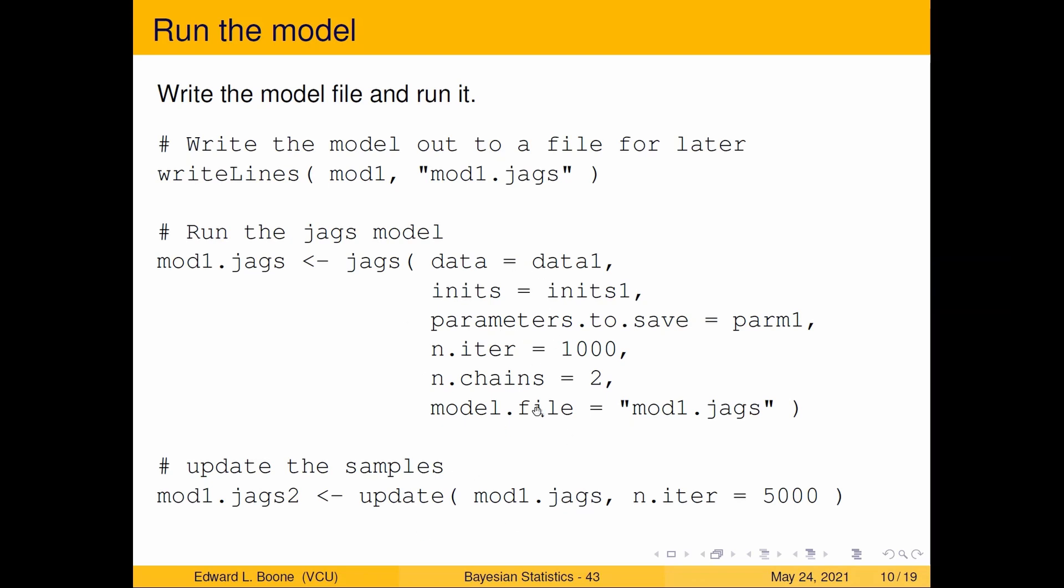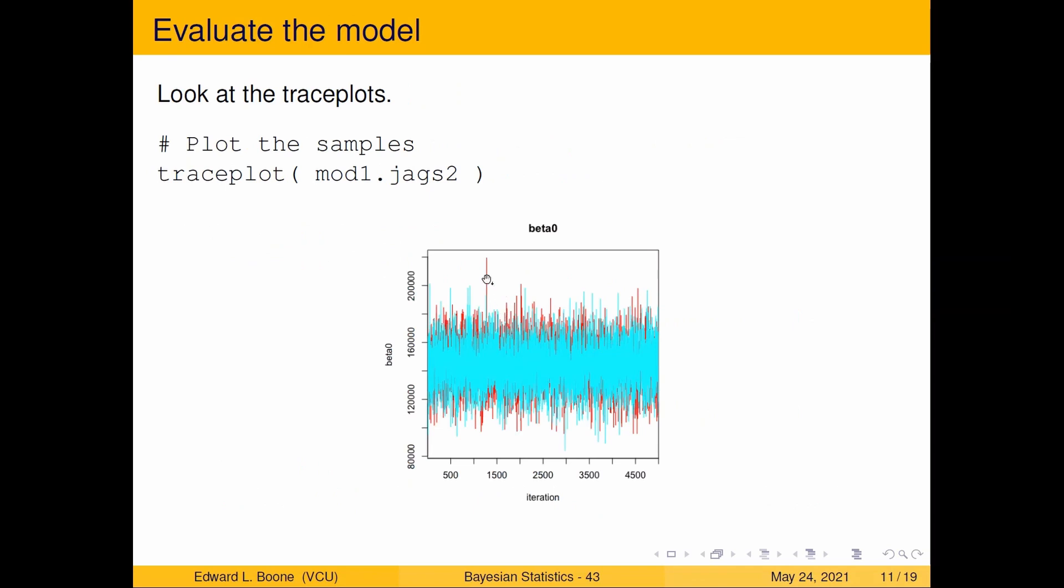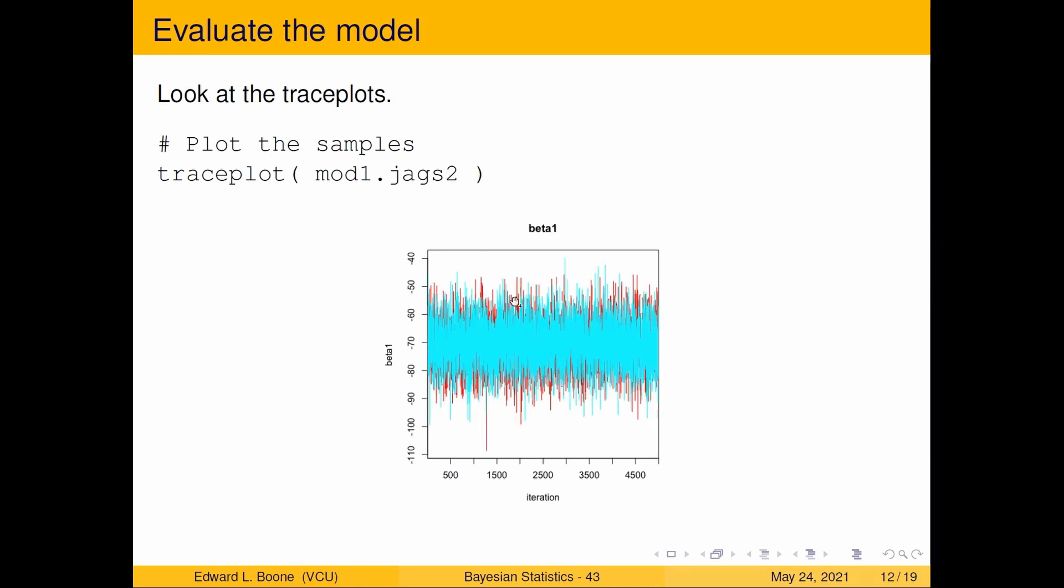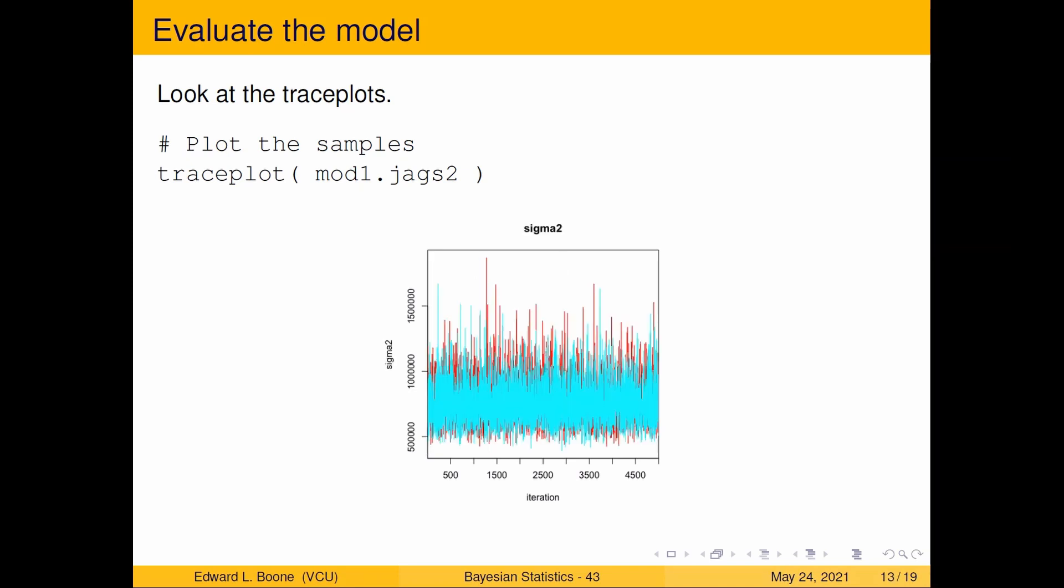Here are my trace plots when I run this. Notice it's flat, looks like a fuzzy caterpillar just like last time. Last time didn't lead us on that there was a problem. Notice how big these numbers are on the side, and that was part of our problem. For beta one, it's pretty flat, fuzzy caterpillar looking thing, and notice all of these values are negative. That would make sense because the data was going downhill in a negative trend.